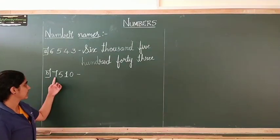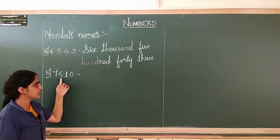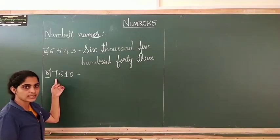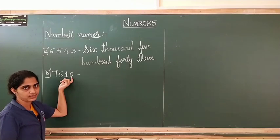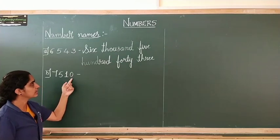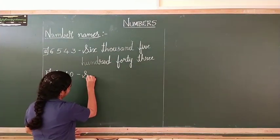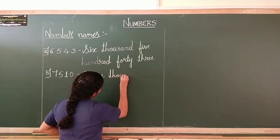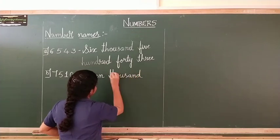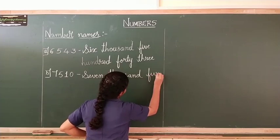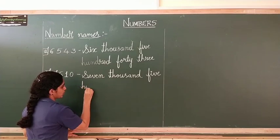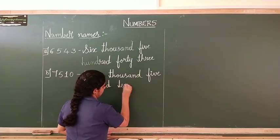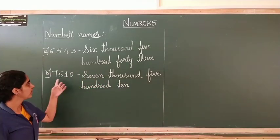Now tell me, how do you read this number? Yes — 7 is in thousands place, 5 is in hundreds place, 1 is in tens place, and 0 is in ones place. When we read this number, it will be 7,510. How do we read? 7,510. In the same way we are writing: Seven thousand five hundred ten. This is the number name of this given number.